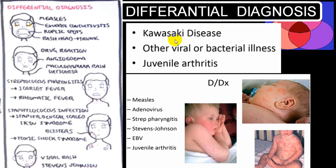Kawasaki disease is a very close differential diagnosis of other viral and bacterial infections, including measles with exudative conjunctivitis and Koplik spots, drug reactions, scarlet fever, rheumatic fever, toxic shock syndrome, staphylococcal infections, Stevens-Johnson syndrome, and viral rash. There are many conditions producing similar findings, but the most important clue is fever persistent for more than five days with four of the five criteria — you should suspect Kawasaki.